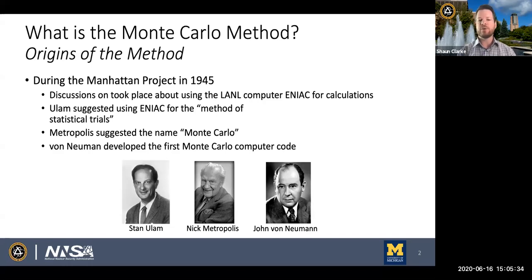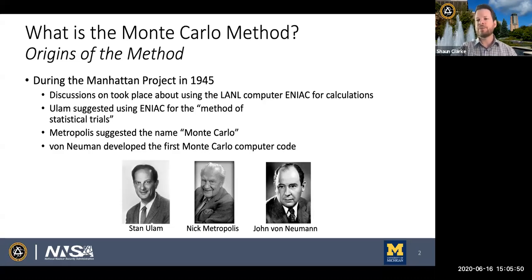Nick Metropolis was the one who first suggested the name Monte Carlo, and von Neumann was the father of the Monte Carlo code, which many of us know as MCNP, the code that comes out of Los Alamos. There are many codes around the world that perform particle transport and other calculations using the Monte Carlo method.